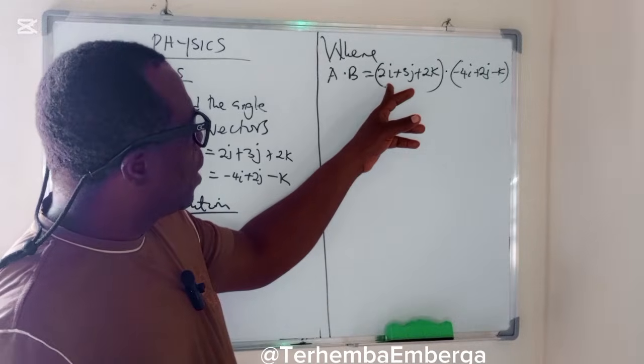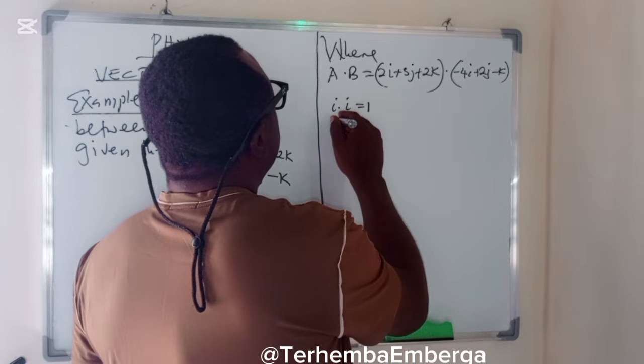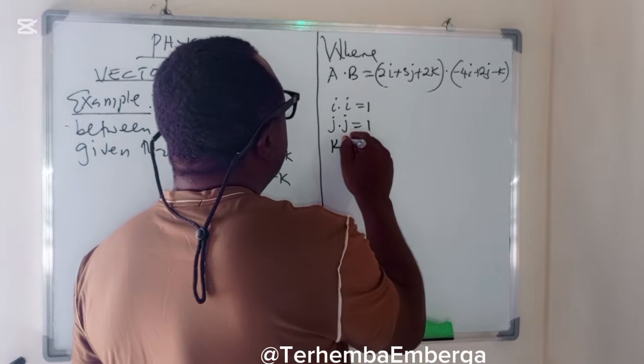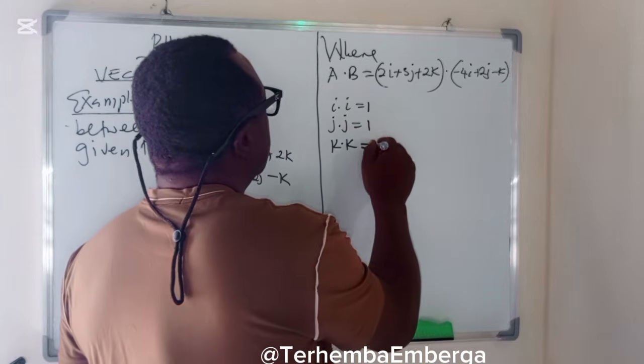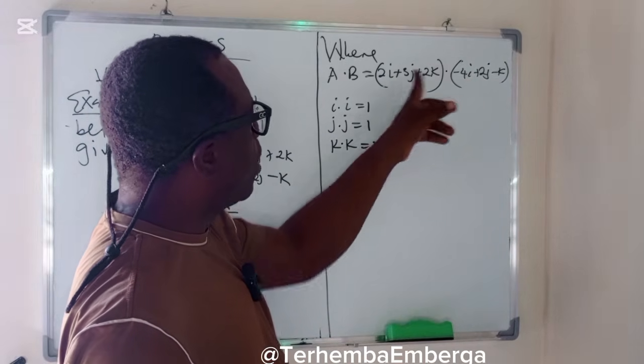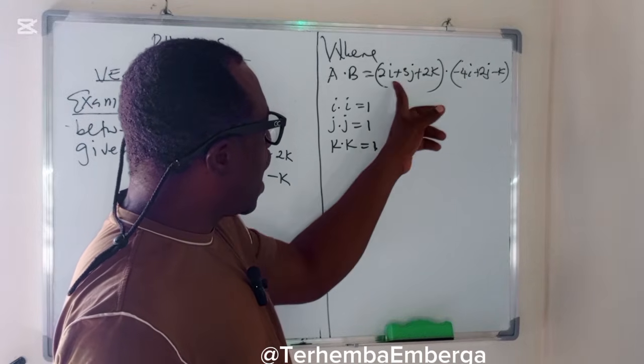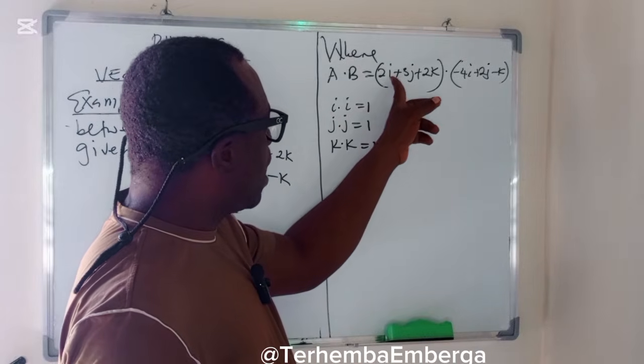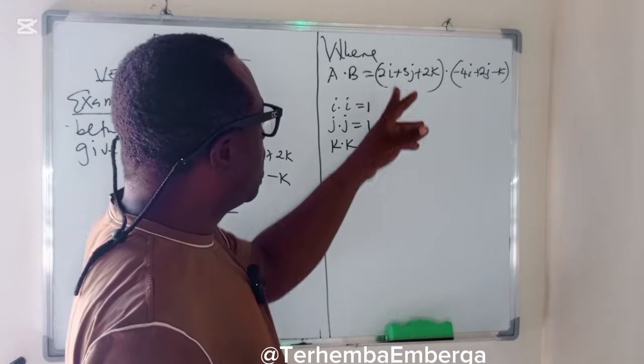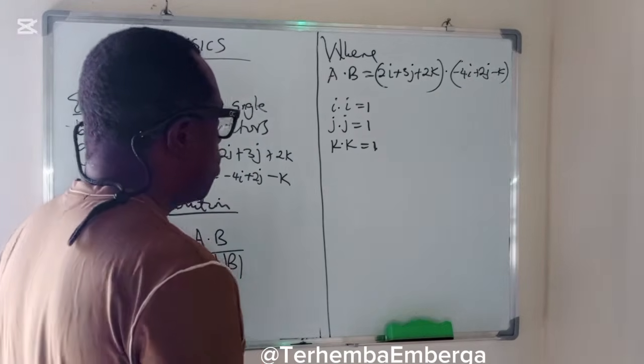Because we are aware that I dot I is equal to 1. So if you say 2I multiplied by this, it holds because I dot I is 1. Then I dot J, 2I multiplied by 2J, I dot J is 0. So we simply multiply this by this, the I's, the J's, the K's. As simple as that.